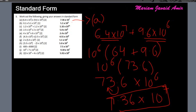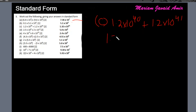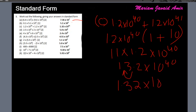Let's also do part C without a calculator. Part C is 1.2 × 10⁴⁰ + 1.2 × 10⁴¹. Take 1.2 × 10⁴⁰ as common, leaving (1 + 10) = 11, so we get 11 × 1.2 × 10⁴⁰. That's 13.2 × 10⁴⁰. Moving the decimal one place to the left adds 1 to the power, giving 1.32 × 10⁴¹.